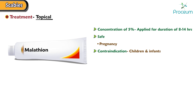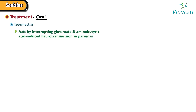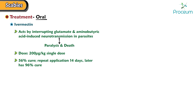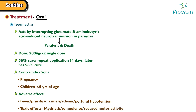Malathion can be particularly useful in the control of epidemic effects within institutions. Now let's cover oral treatment. The main medication of choice is ivermectin. It acts by interrupting glutamate and gamma-aminobutyric acid-induced neurotransmission in parasites, causing paralysis and death. A single dose is 200 micrograms per kilogram, associated with a 56% cure rate. With repeat application for 14 days, it has a 96% cure rate. Ivermectin should be avoided in pregnancy and in children of less than 5 years of age. Adverse effects include fever, pruritus, dizziness, edema, and postural hypotension. Toxic effects include mydriasis, somnolence, reduced motor activity, tremors, and ataxia.